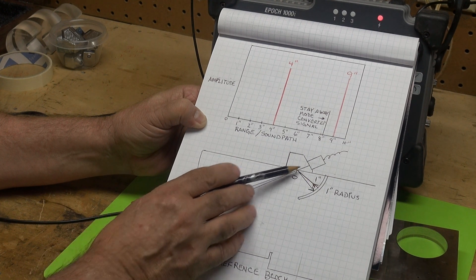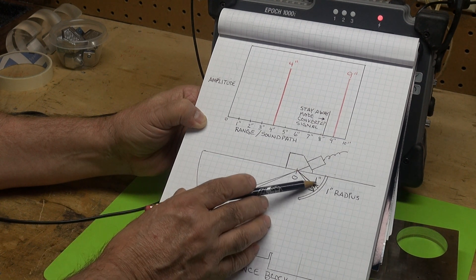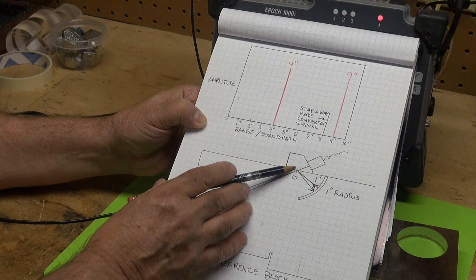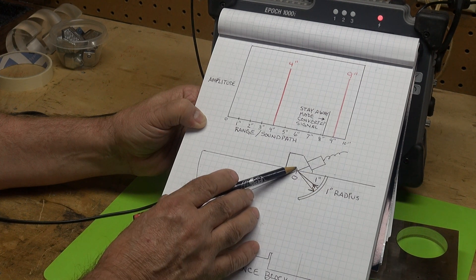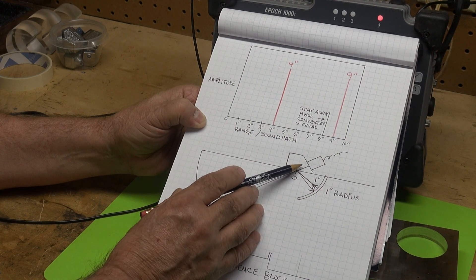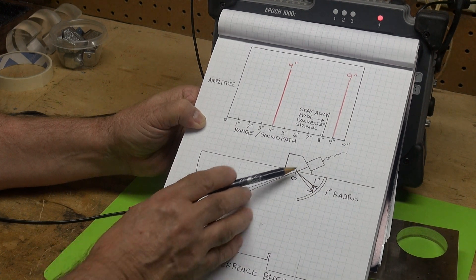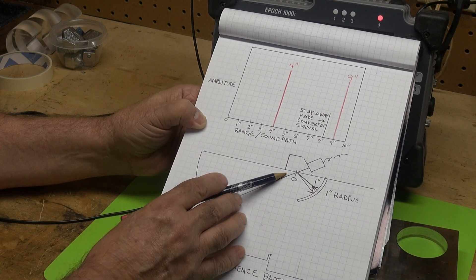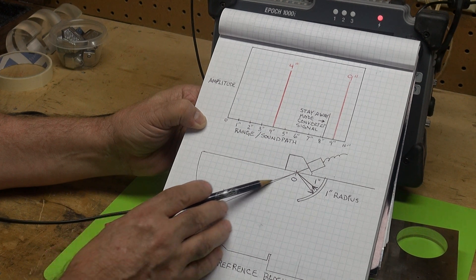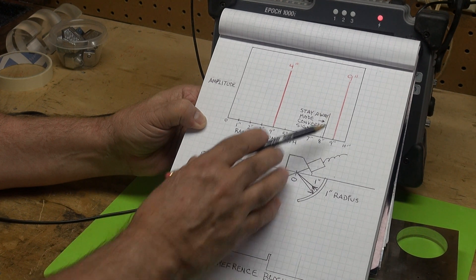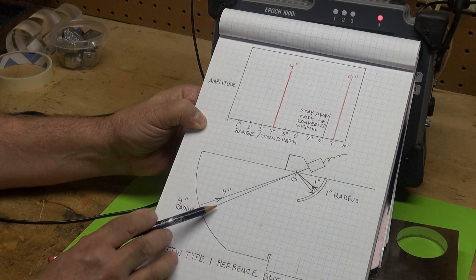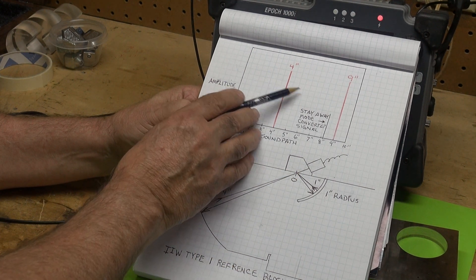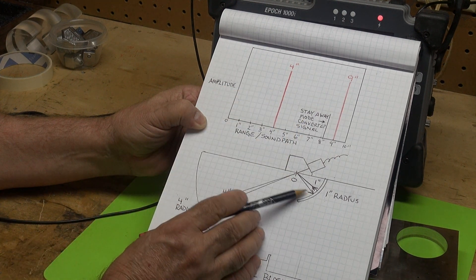That 1 inch radius will come back, so we have 4 inches plus 1 inch. But that 1 inch when it comes back does not strike the transducer at a perpendicular angle, so we won't see it. We see 4 inches, and then 1 inch is 5, and then 4 more inches coming back will be 9 inches. So it's 4 plus 5 is 9.